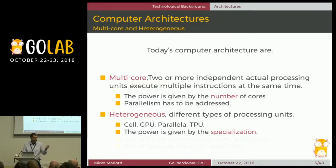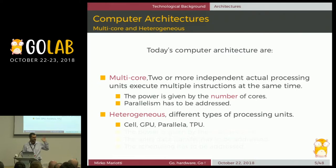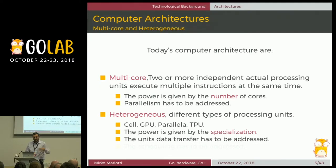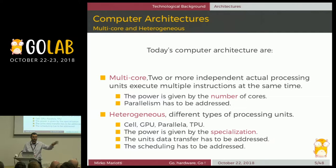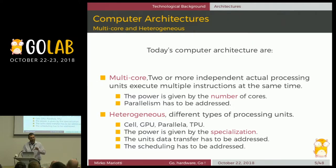We are using heterogeneity to gain power. The power of chips is given by the specialization of cores in doing something. There are several examples, starting from GPUs, and finally to AI accelerators like NVIDIA's or the TPUs from Google. The things to be addressed are the data transfer between chips and the scheduling of processes that run on different processors.